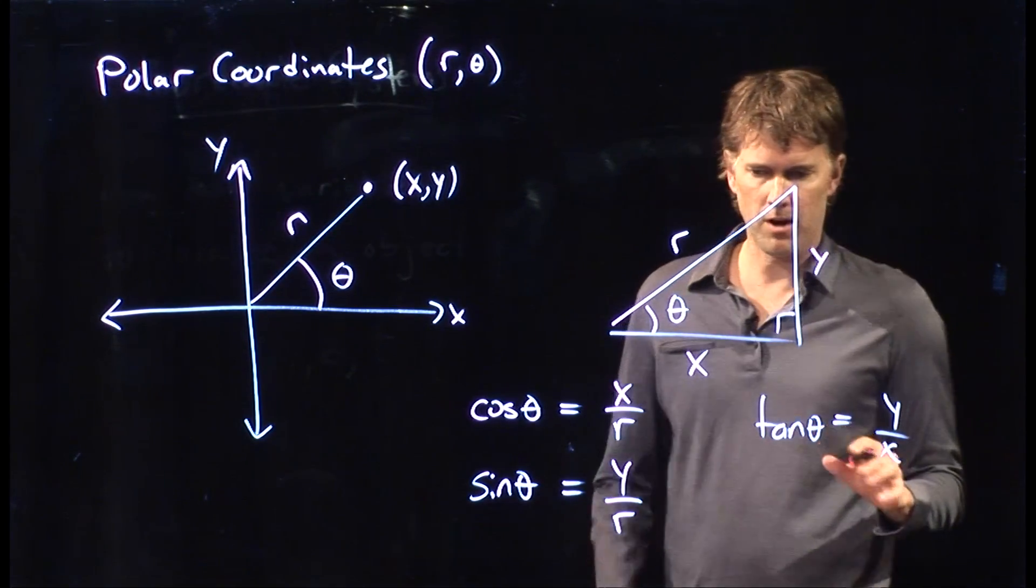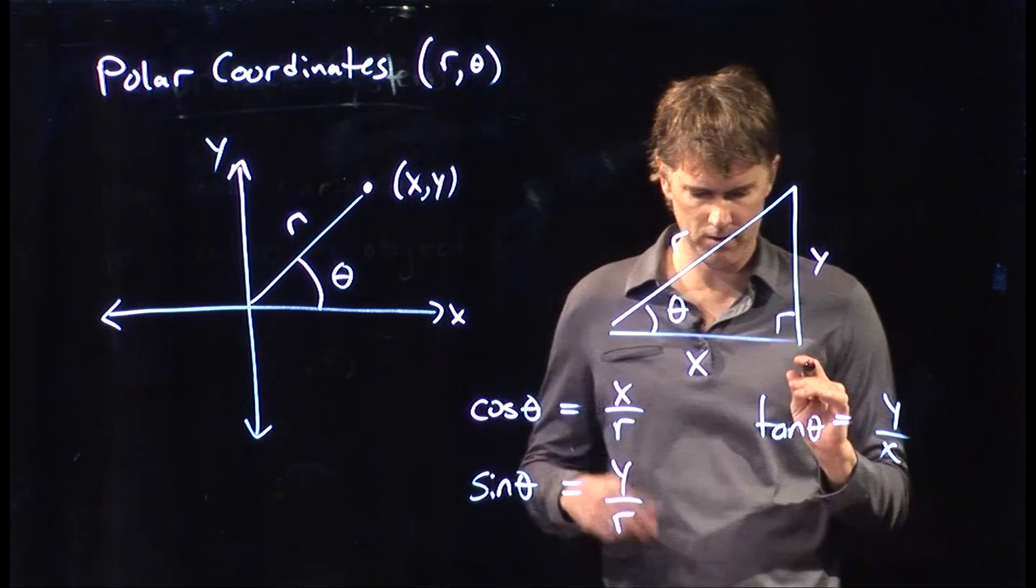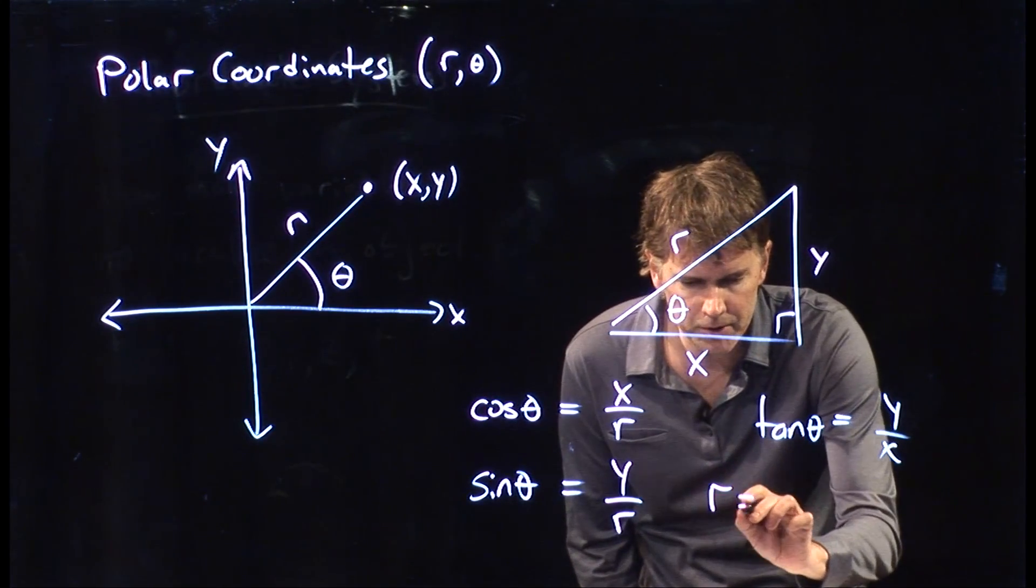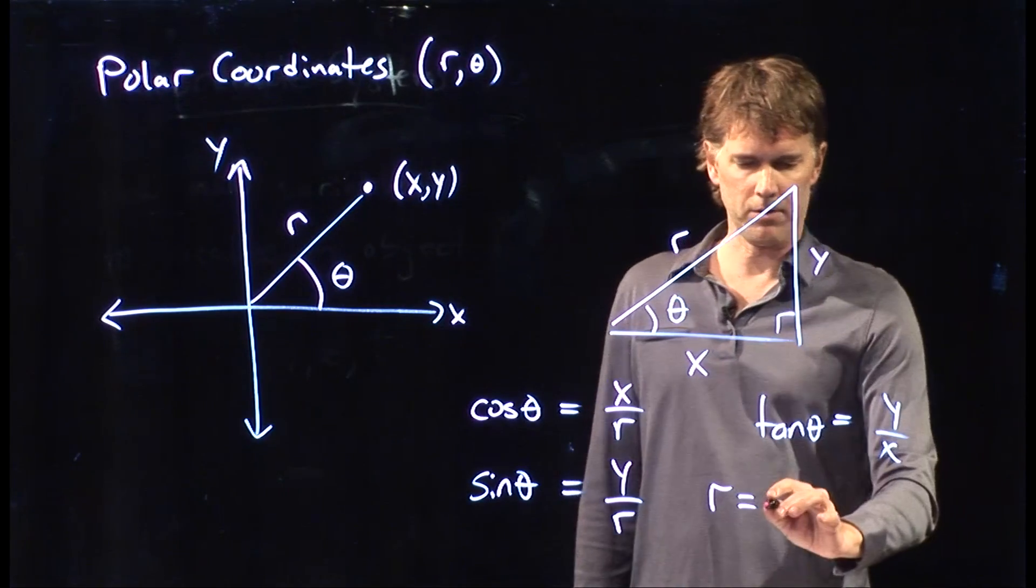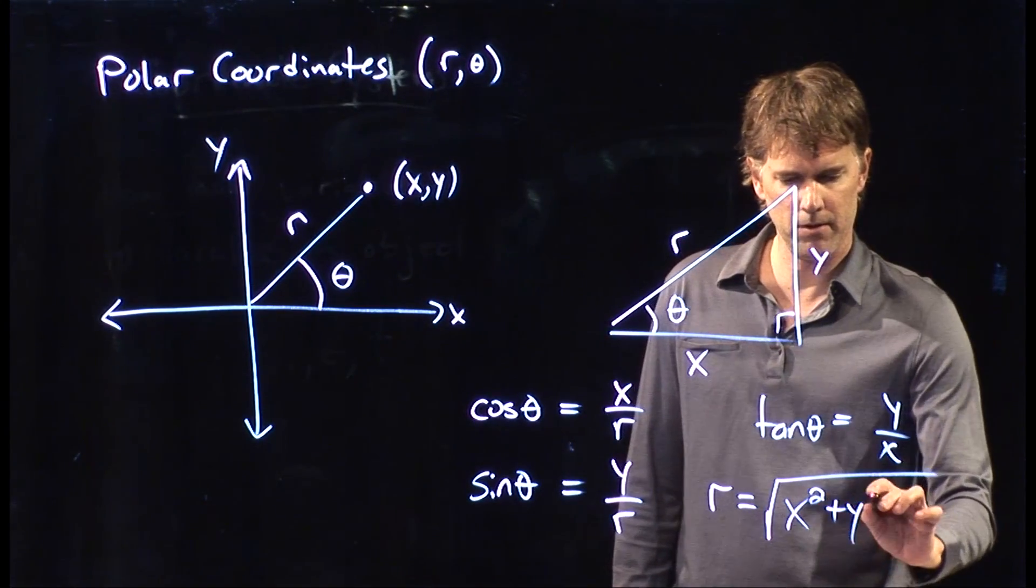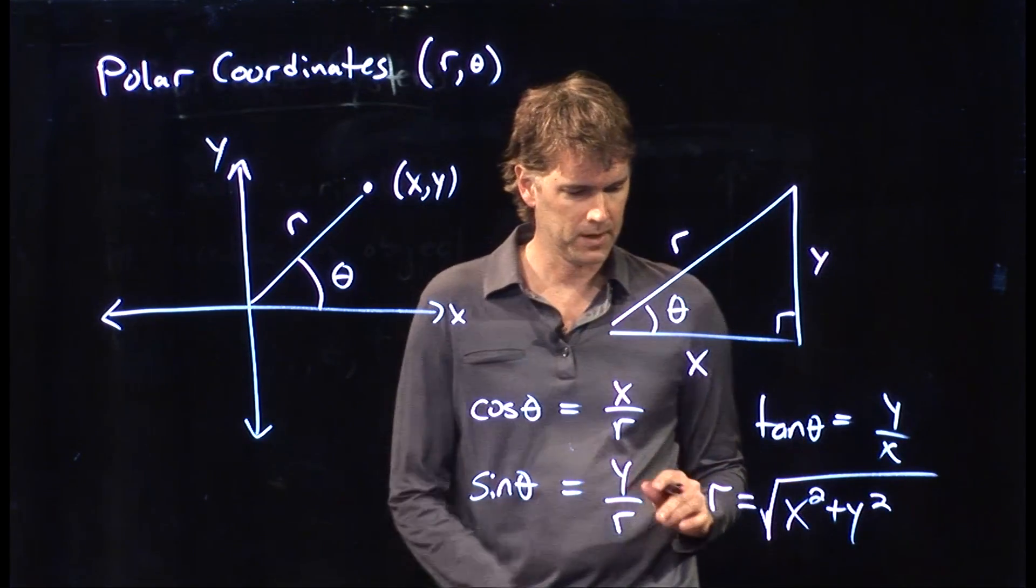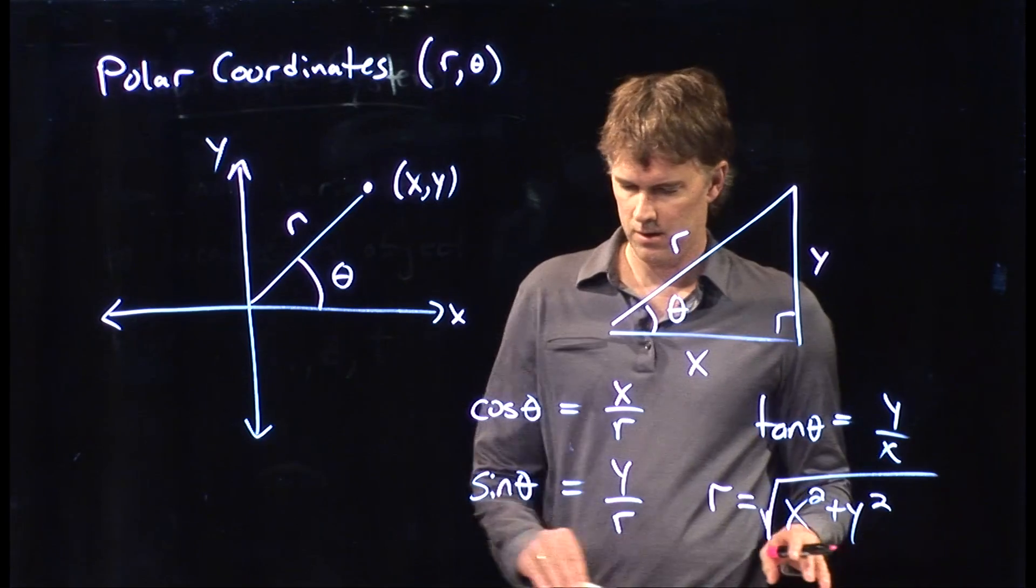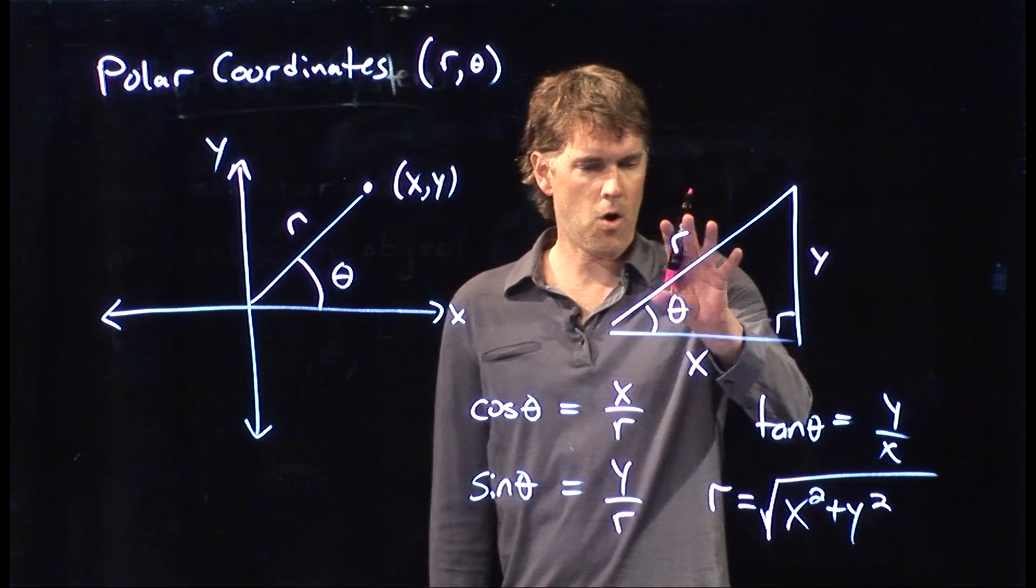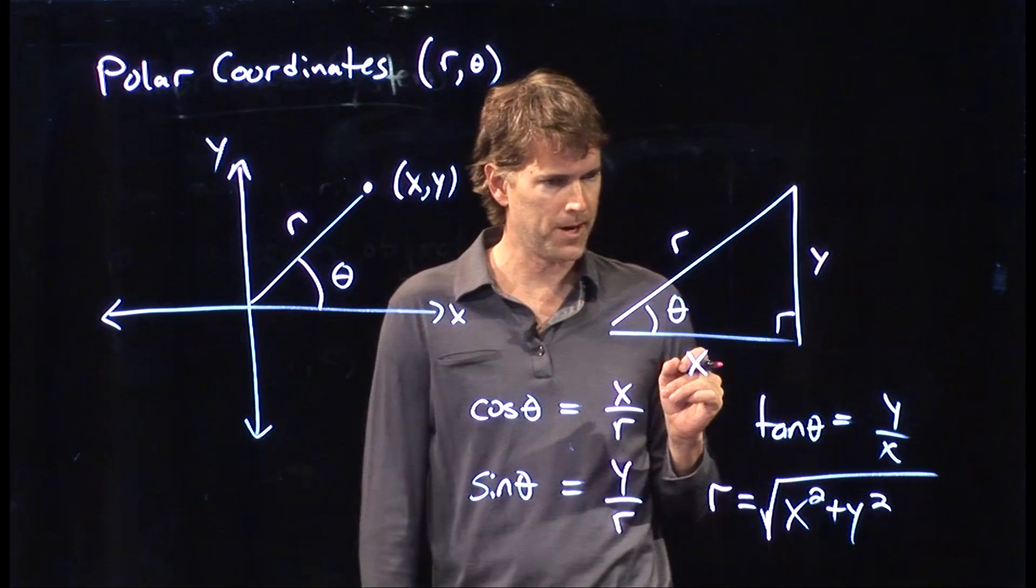All right. So those are our nice trig relationships for this particular triangle. But we also have Pythagoras, which told us that the hypotenuse of the right triangle is the square root of the sum of the squares of the other two sides. So all those things describe how r and theta relate back to our Cartesian coordinates x and y.